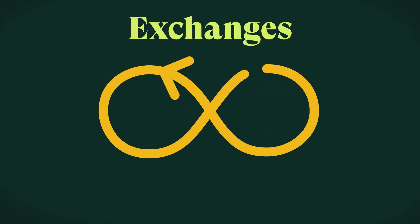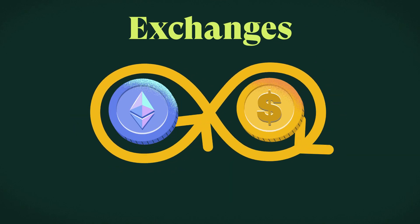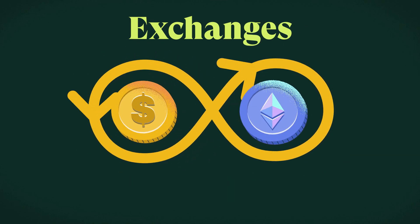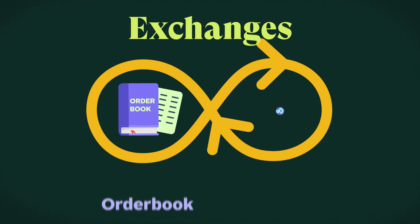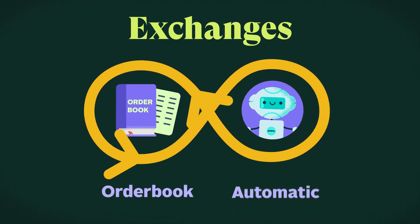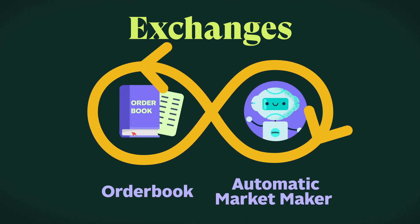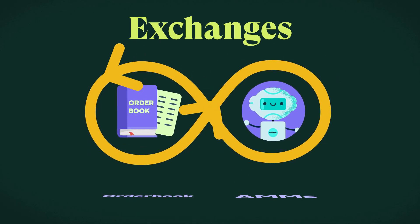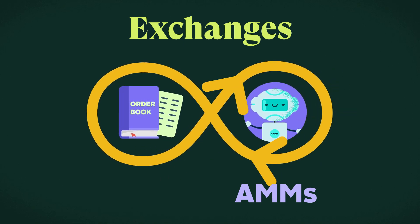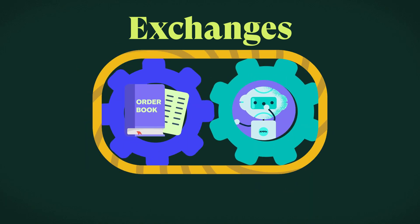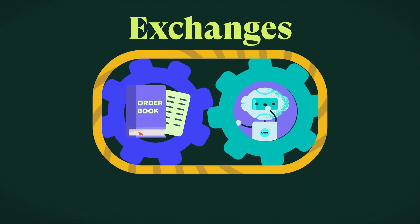There are two main types of exchanges when it comes to buying and selling cryptocurrencies: order book exchanges or automatic market maker exchanges, also known as AMMs. But how do they work and what are their differences?